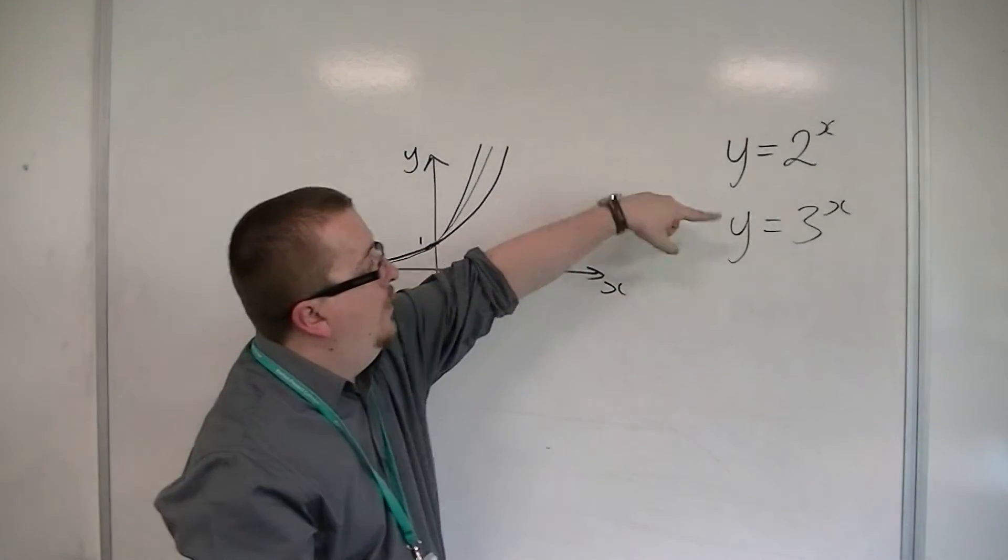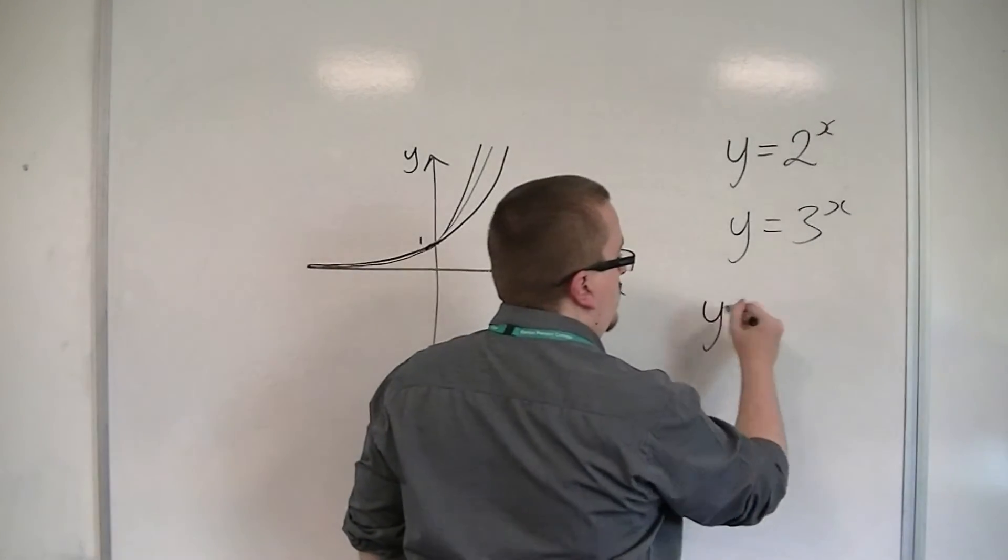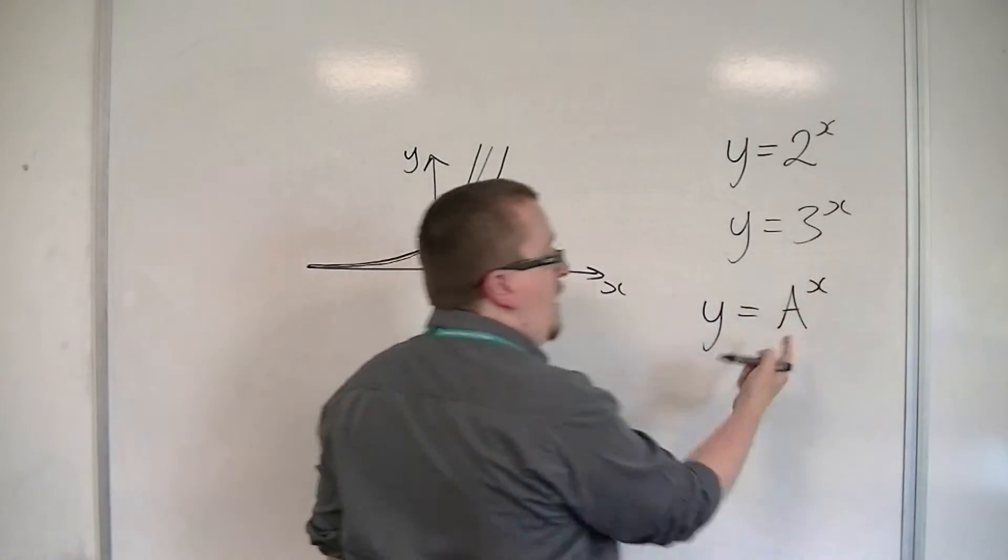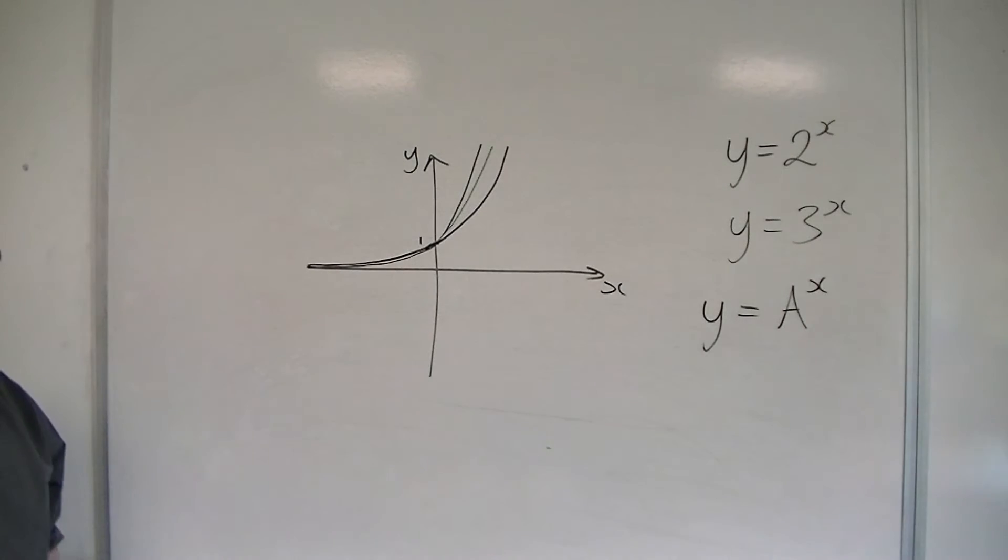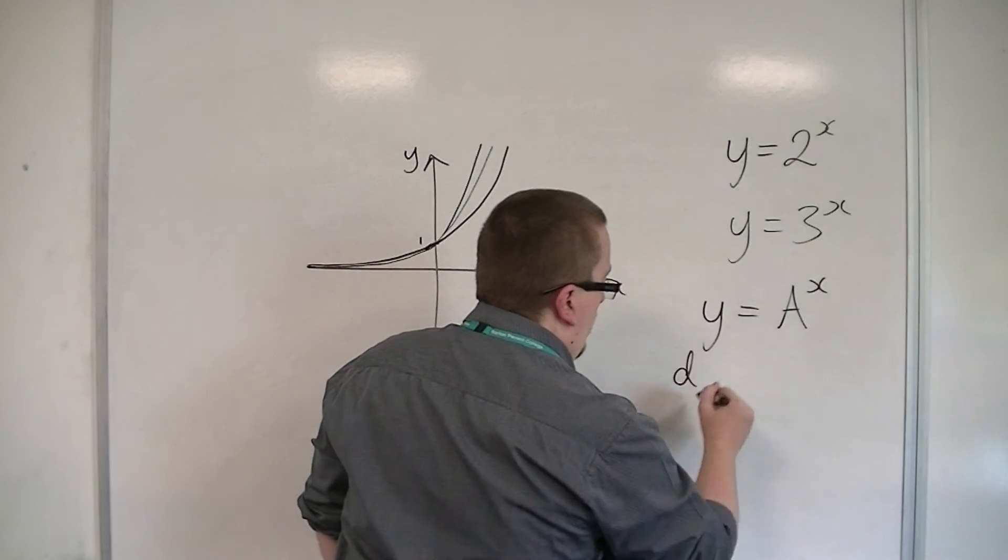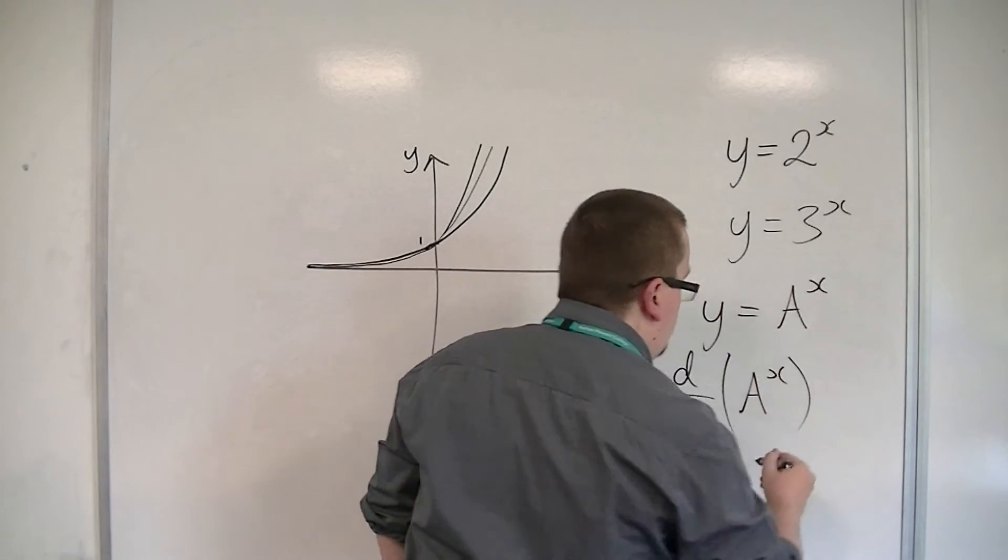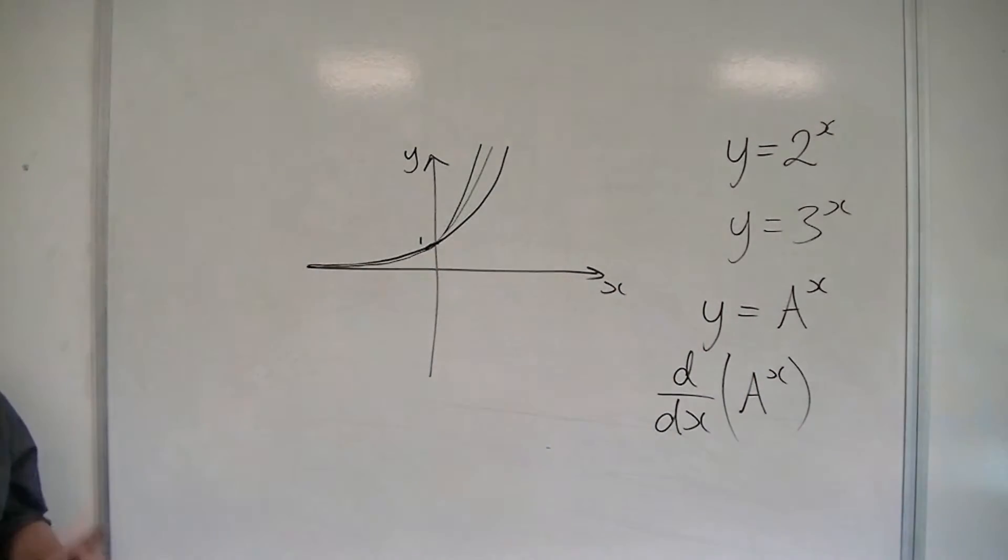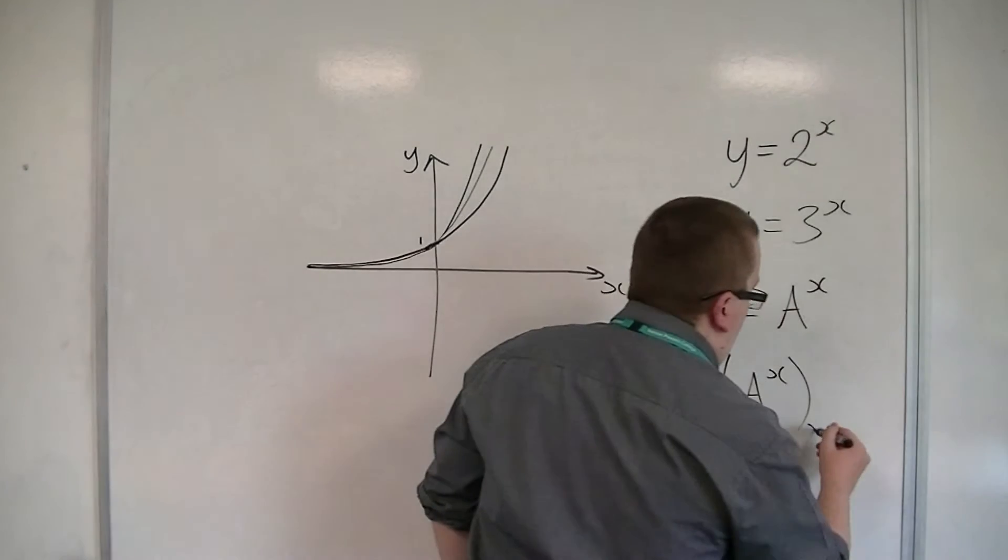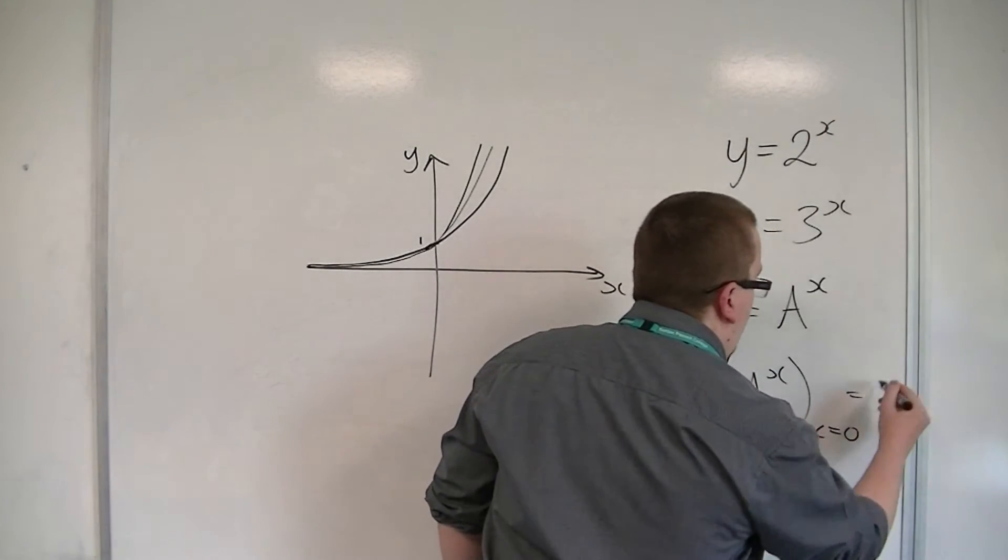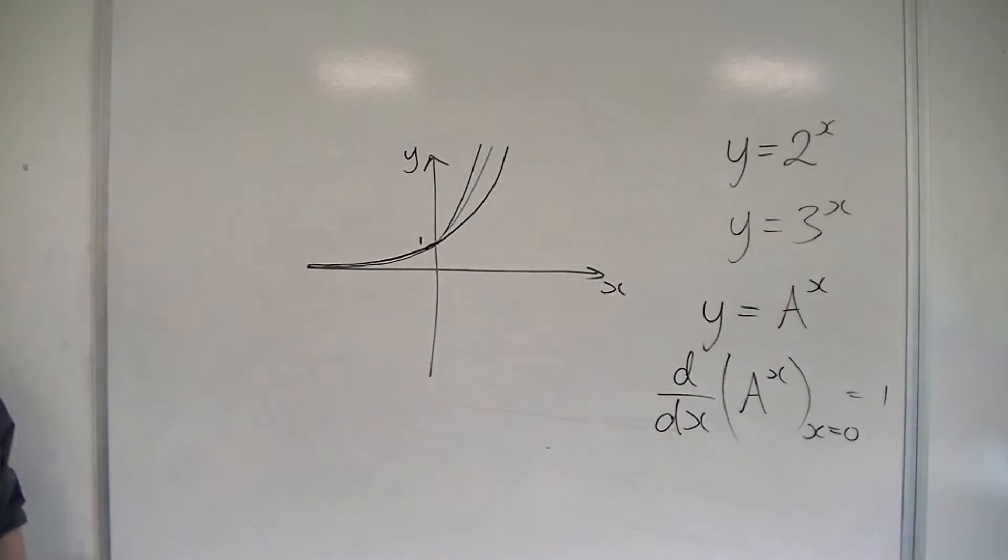The gradient of some number, or rather the gradient of this curve y equals a to the x, so d by dx of a to the x, evaluated when x is 0, is equal to 1.